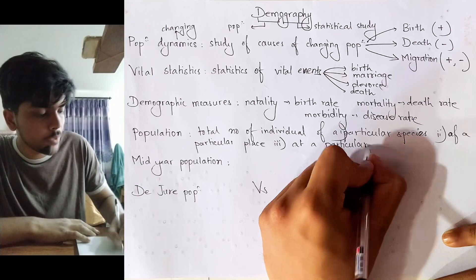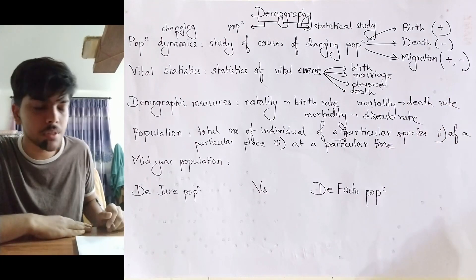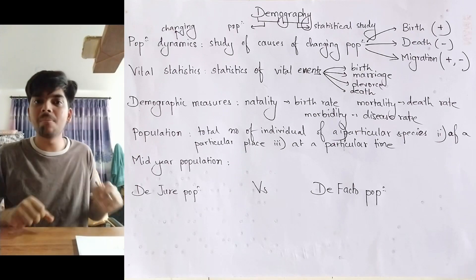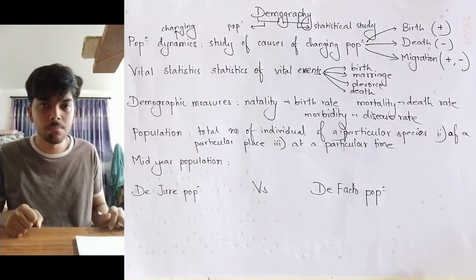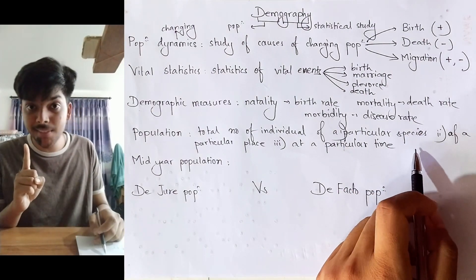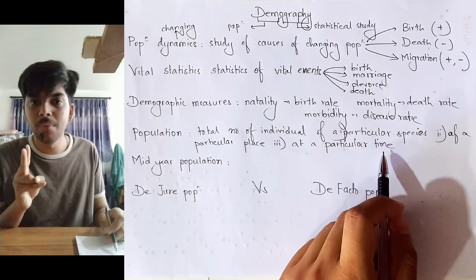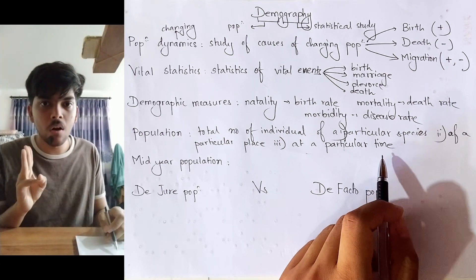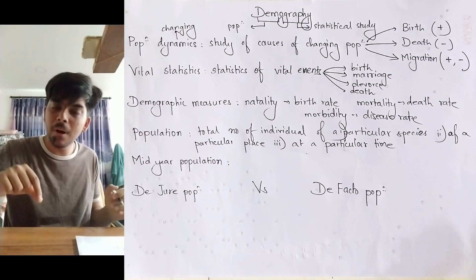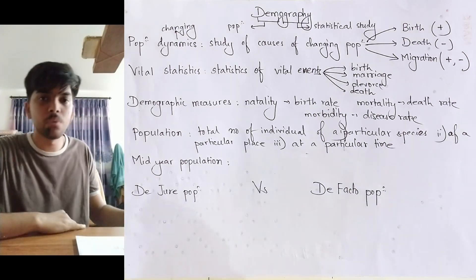For example, we human beings are Homo sapiens. So the number of Homo sapiens living in Kathmandu during 2023 AD — this fulfills all three criteria: particular species (sapiens), particular place (Kathmandu), and particular time (2023 AD). So the number of Homo sapiens living in Kathmandu during 2023 AD gives the population of Kathmandu during 2023 AD.